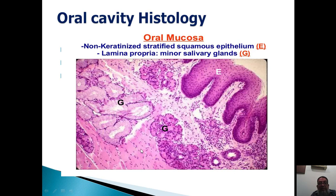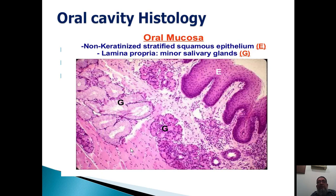Beneath the glands are the oral cavity muscles, which are the orbicularis oris. These muscles are skeletal in type. Look at the picture — these are skeletal muscle nuclei at the periphery and cross striations are also visible. So this is the typical picture of oral cavity histology: epithelium, then lamina propria, glands, and muscle — all four layers are visible, as discussed in the introduction of the GIT.